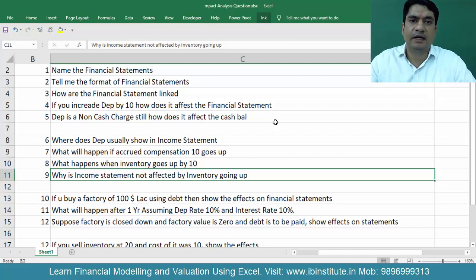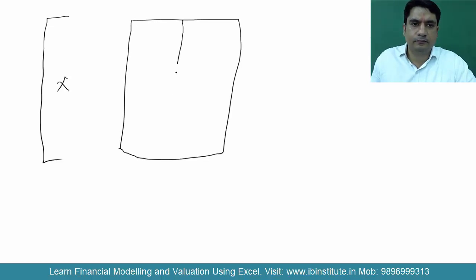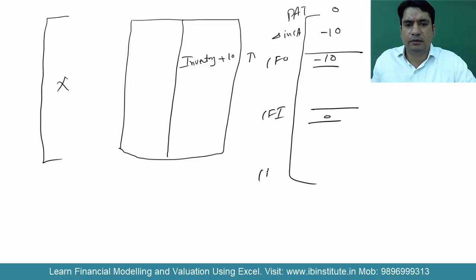Next question: what happens when inventory goes up by 10? Here, only inventory is going up by 10 — meaning you are just buying some inventory. As a result of increasing inventory, nothing will happen to the income statement — no effect. On the balance sheet, inventory will be up by 10. In the cash flow statement, there is no effect on profit, but the change in current asset will be minus 10, so CFO will be minus 10. There is no effect on investing or financing activities. Surplus and deficit is minus 10, so cash goes down. The balance sheet will match.